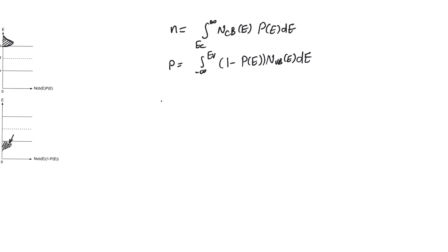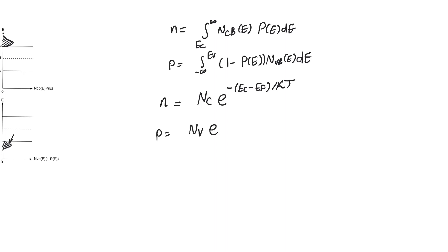N can be approximated as N_C · e^(-(E_C - E_F) / kT), and P is equal to N_V · e^(-(E_F - E_V) / kT).